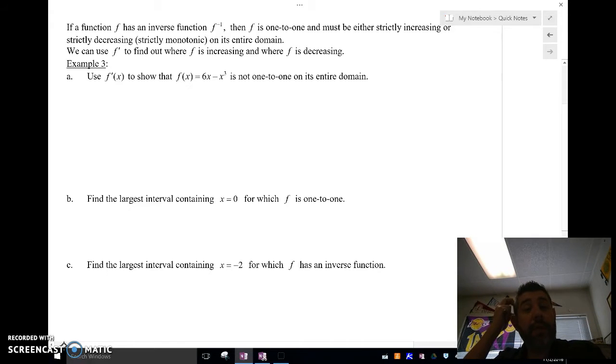One thing you need to know is when we have an inverse, if a function f has an inverse function, then f is called one-to-one, which means that it passes what we call a horizontal line test, meaning that it only will cross a horizontal line once, and it's either going to be strictly increasing or strictly decreasing. So we call that monotonic.